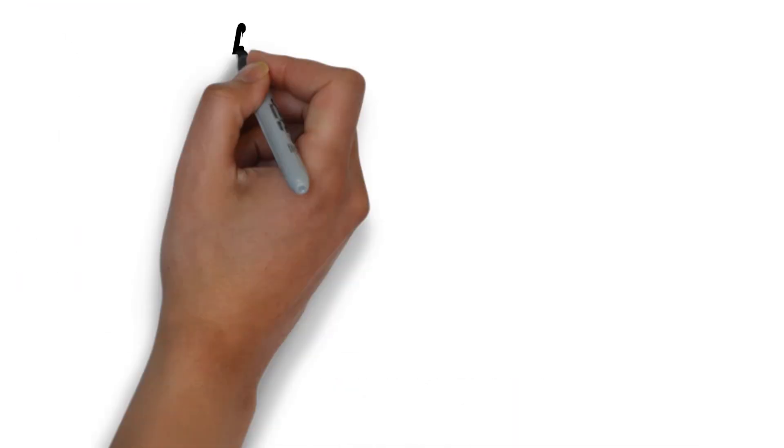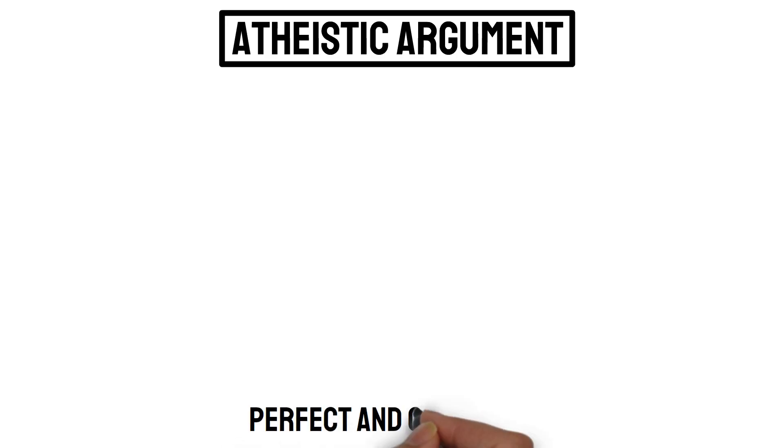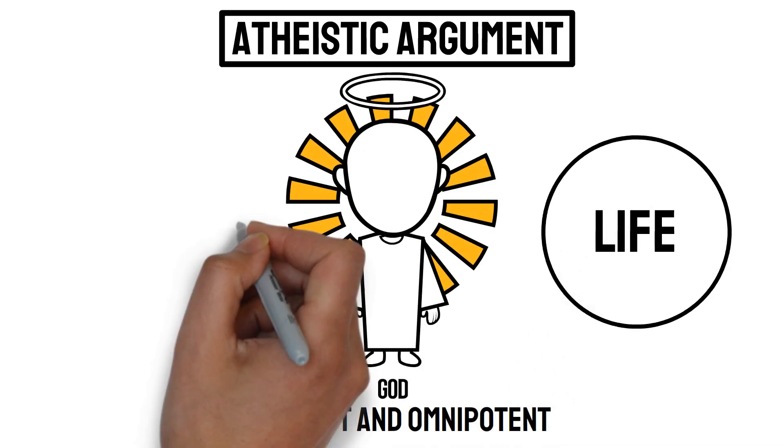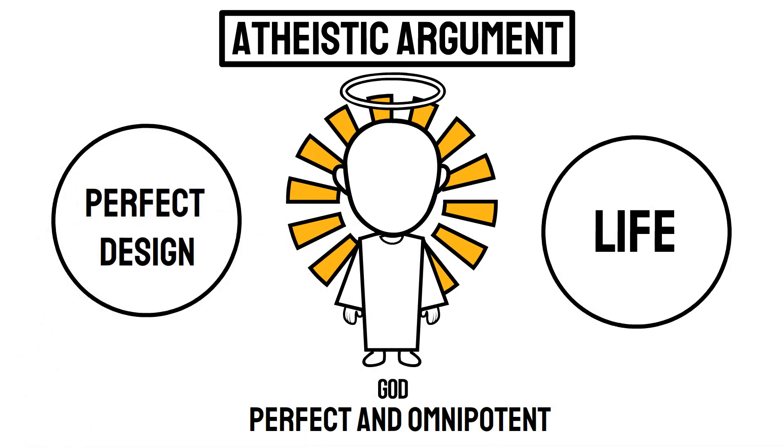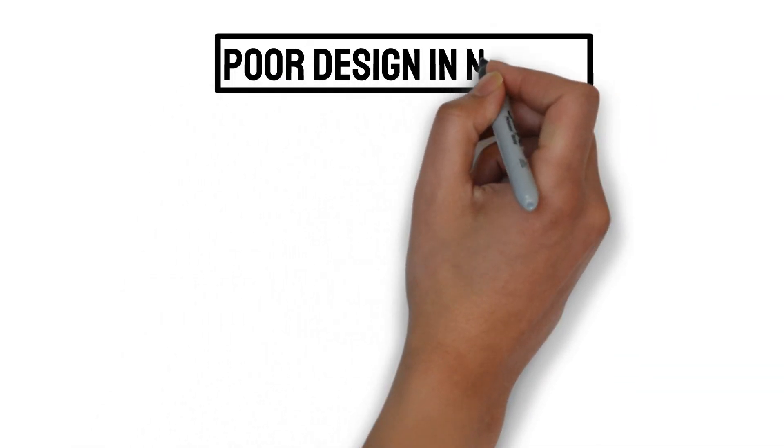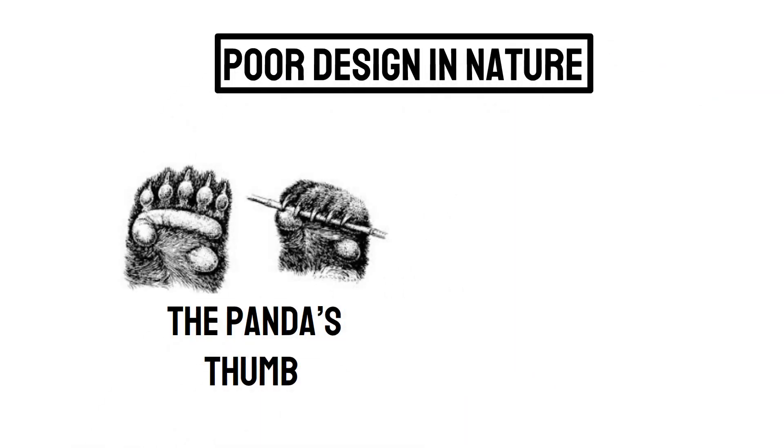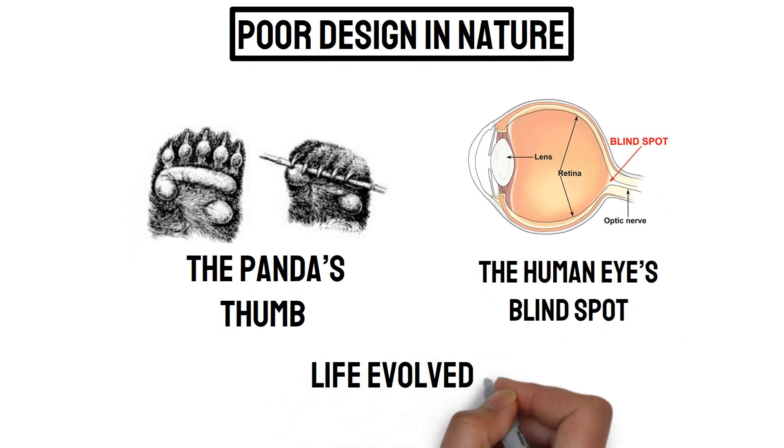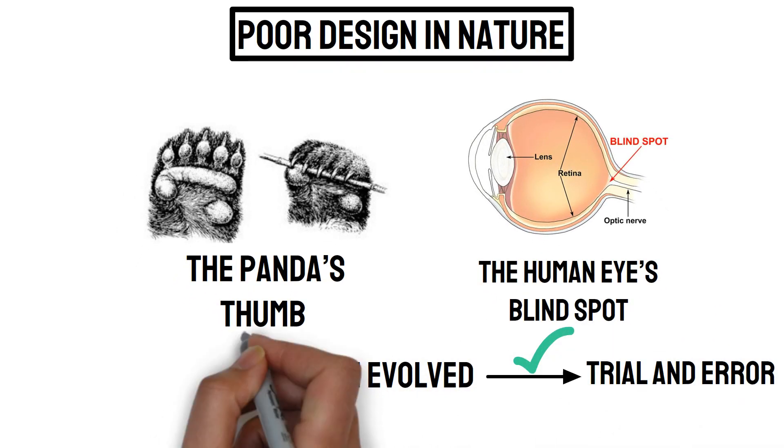Number six, bad design in nature. The atheistic argument is that if a perfect and omnipotent god created life, we would expect perfect design. However, there are many examples of poor design in nature, such as the panda's thumb or the human eye's blind spot. This suggests that life evolved through trial and error, not through intentional design.